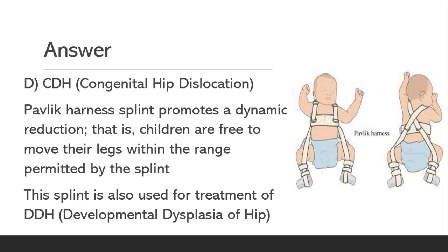The answer is option D, Congenital hip dislocation. The Pavlik harness promotes a dynamic reduction, i.e., children are free to move their legs within the range permitted by the splint. This splint is also used for the treatment of DDH, developmental dysplasia of hip.